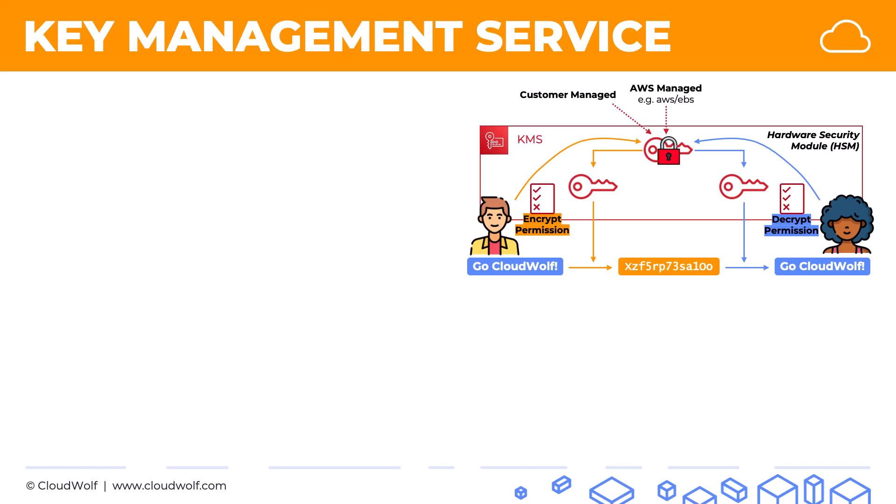You can audit both customer managed keys and AWS managed keys — it's a very powerful feature. KMS integrates with CloudTrail, so you can check all these things. Look out for exam questions about that. Finally, there are AWS owned keys, for example the SSE-S3 key. You don't even see these keys — they're used across multiple accounts, not just yours. You can't manage them, can't rotate them, and can't even audit them.